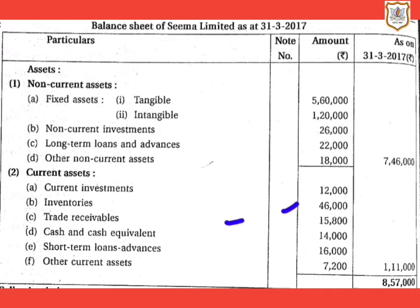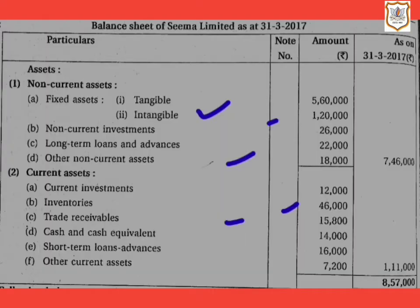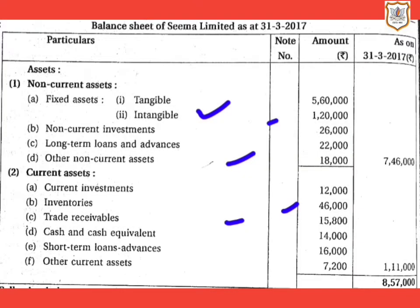Other non-current assets of 18,000 will be shown under non-current assets. Next, fixed assets (intangible) will be shown under non-current assets, amount is 1 lakh 20,000. Long-term loans and advances are loans and advances expected to be received back after 12 months from the date of the balance sheet, so they are shown under non-current assets, amount is rupees 22,000.